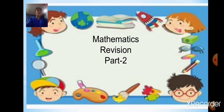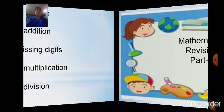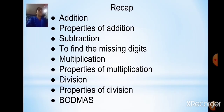In chapter 2 — the four operations — we have already learned about the basic four operations: addition, subtraction, multiplication, and division. We have also learned about their properties. So let us take a quick recap of all the basic four operations again.